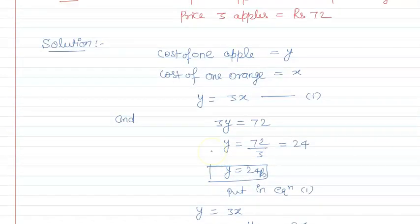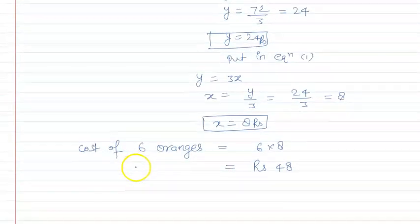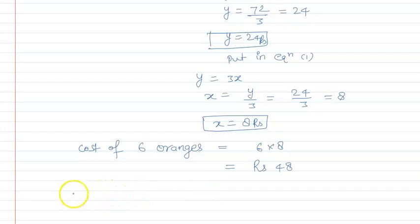Now let's see which option is correct. Looking at options A, B, C, D - option C is the correct answer. That is, cost of 6 oranges equals Rs. 48. Hence we can say that option C is correct.